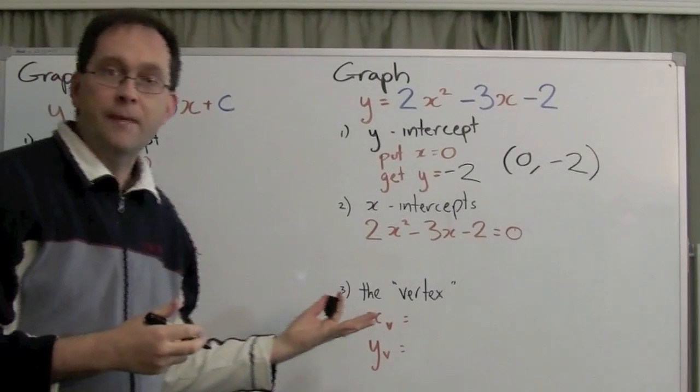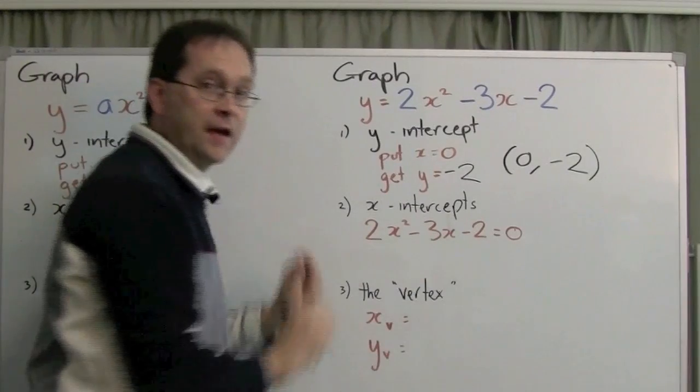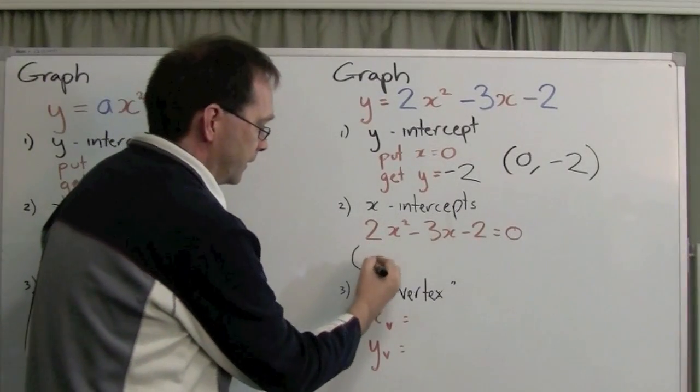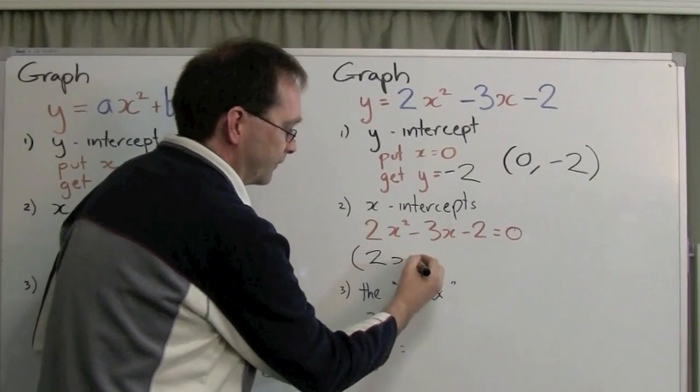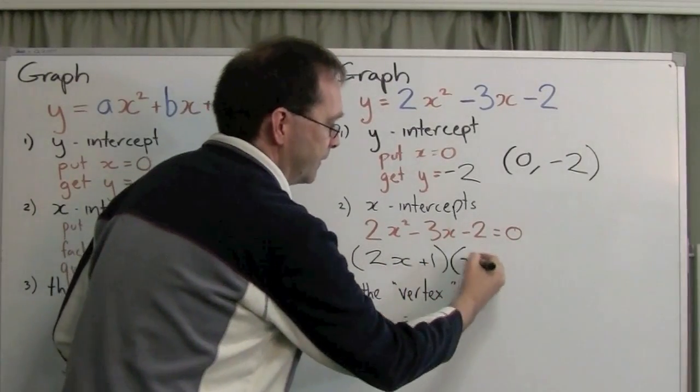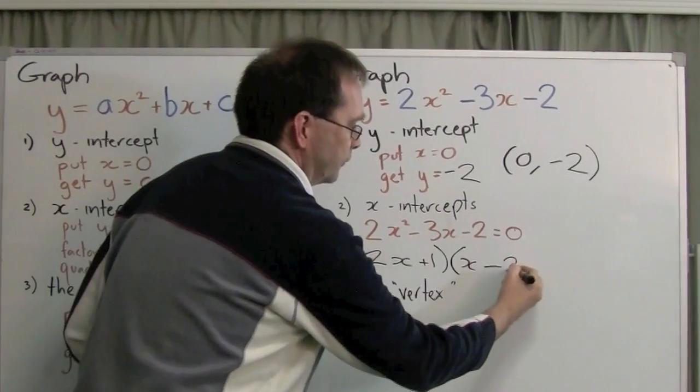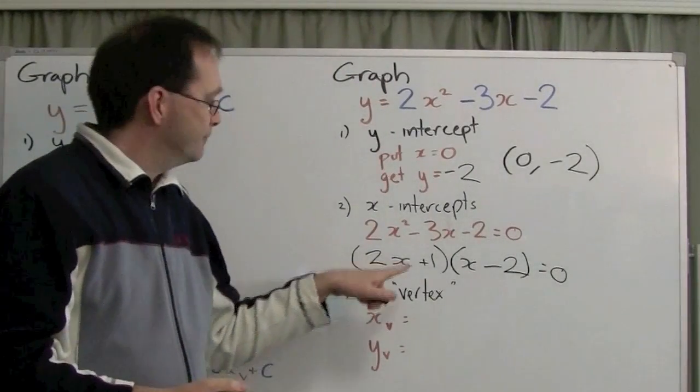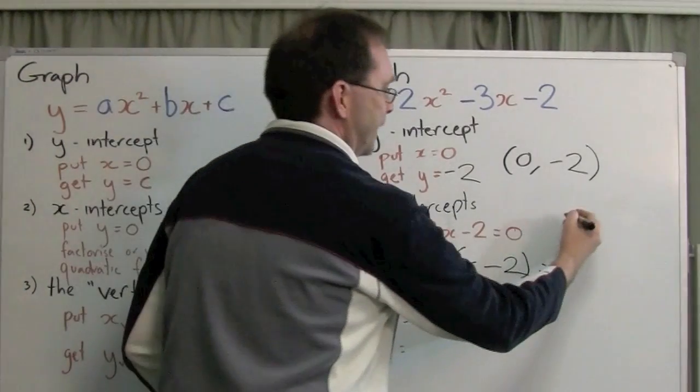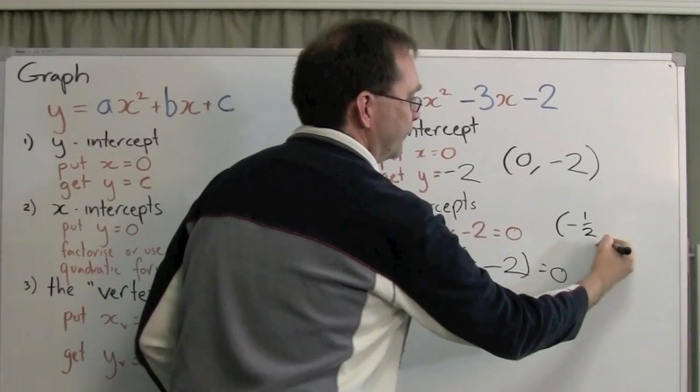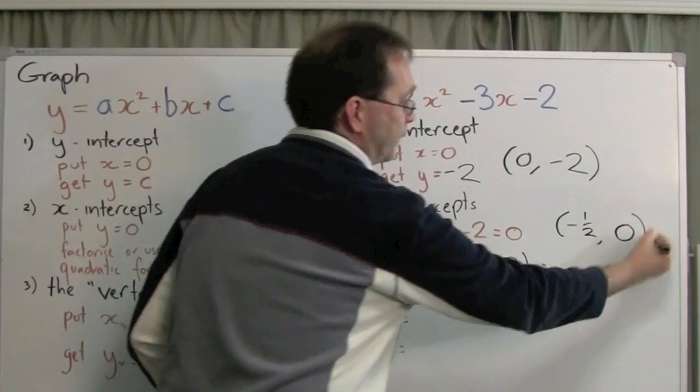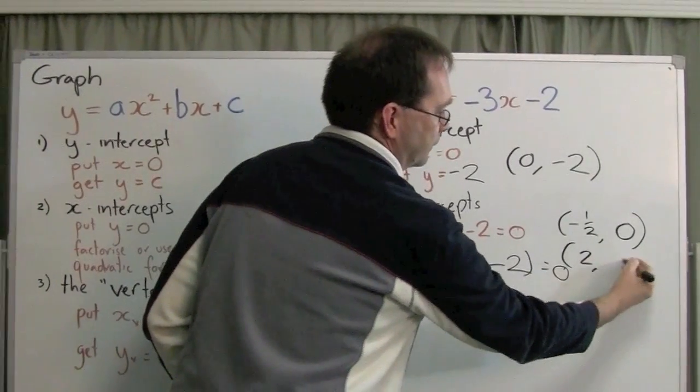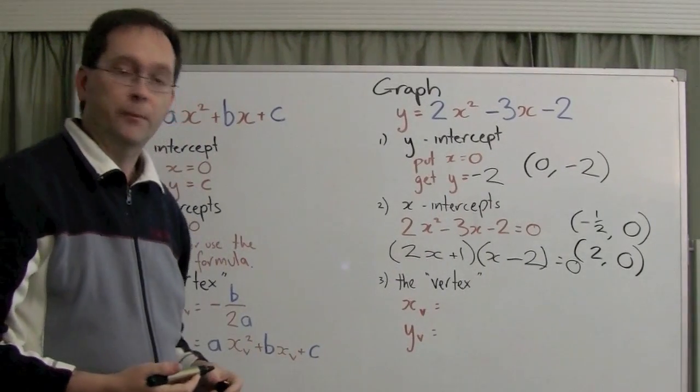The x-intercepts. Well, I can either factorize this equation or use the quadratic formula. I'm going to factorize it. And that gives 2x plus 1 times x minus 2 equals 0. So x is either minus a half or 2. That gives me another two points on my parabola. Minus a half, and y is 0, remember? And 2, 0.